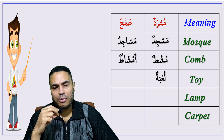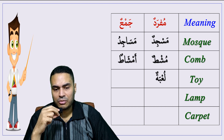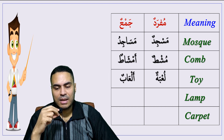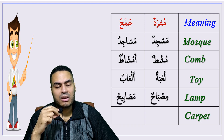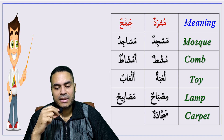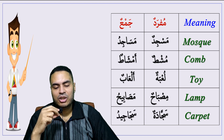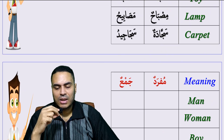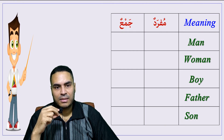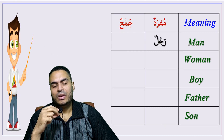Toy — la'ibatun, plural: al'ab. Lamp — misbahun, plural: masabih. Carpet — sajjadatun, plural: sajajid. Man — rajulun...